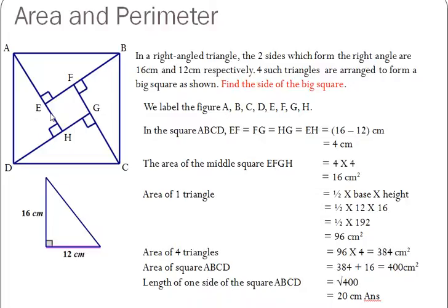The area of the middle square EFGH is equals to 4 times 4, which is equals to 16 cm².